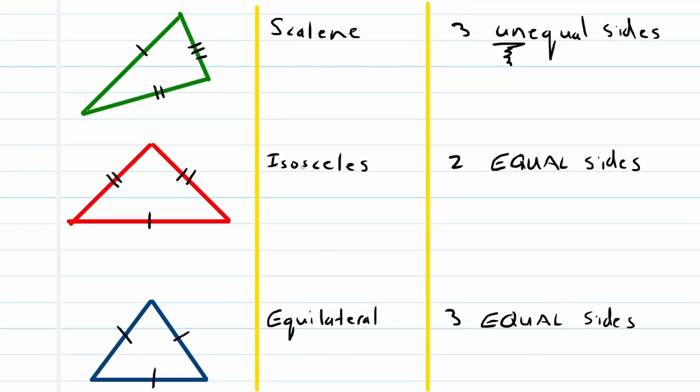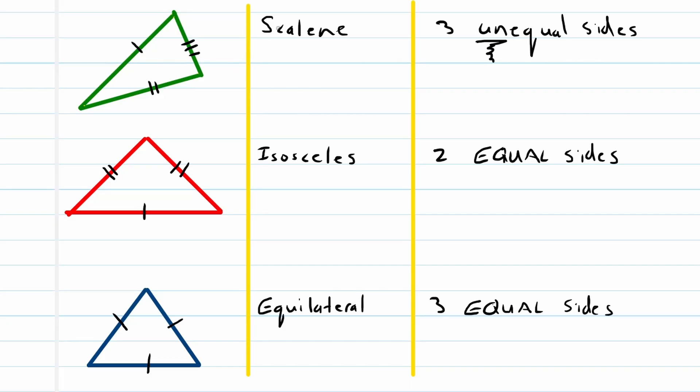So, purely classified through its sides: scalene - three unequal sides, isosceles triangle - two equal sides, an equilateral triangle - three equal sides. Part two will follow soon and that will be focused on angles.